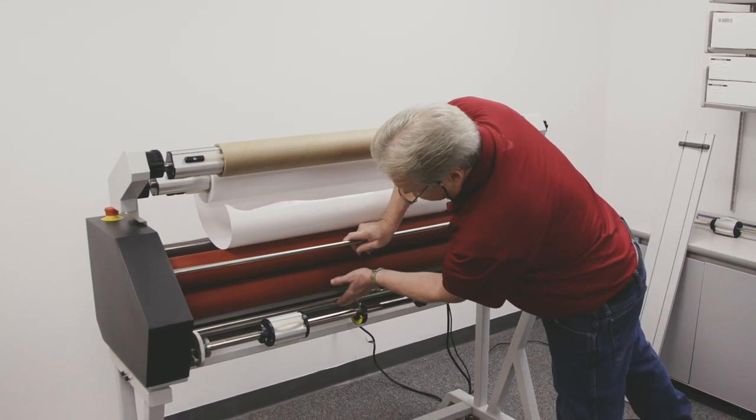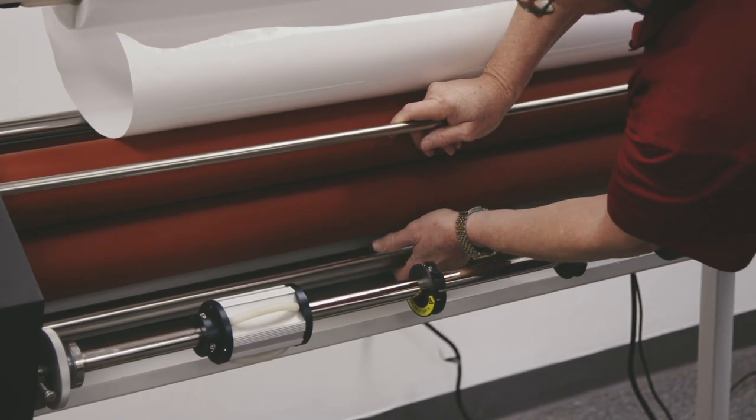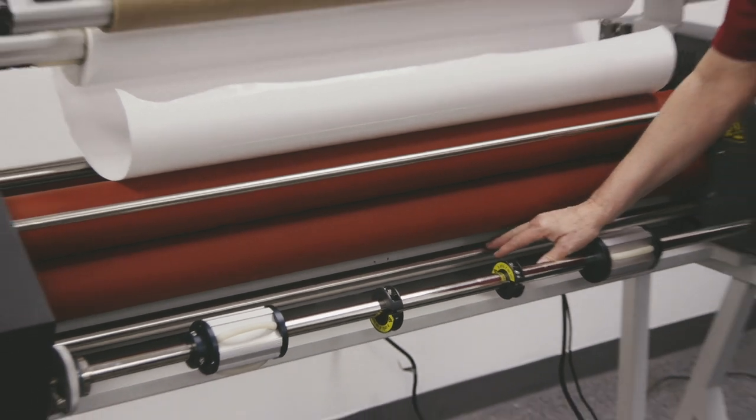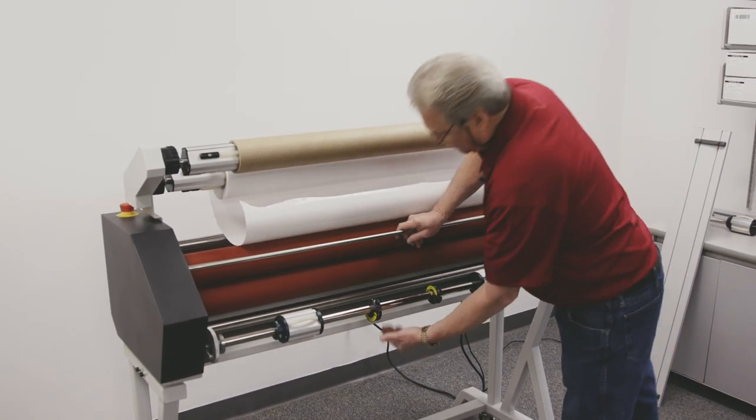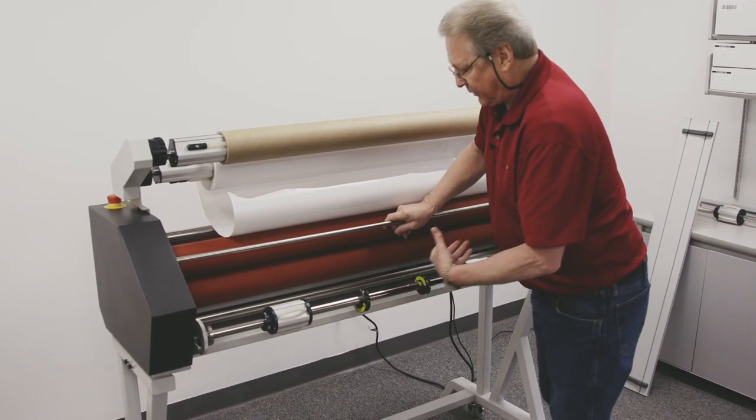You'll notice that there is an idler bar down here for thermal films. For the PSA mounting adhesive we're not going to use this. The reason why is if we try to run our mounting adhesive through here it's just going to wrap up on us.